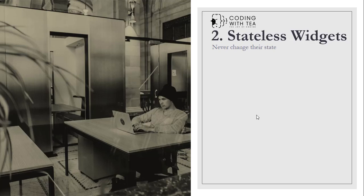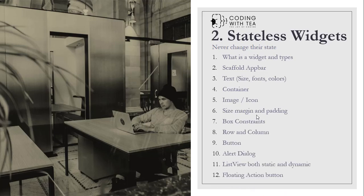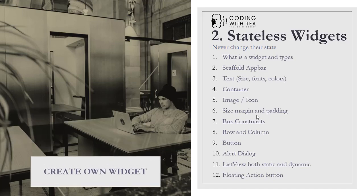Then there are stateless widgets — widgets that never change their state once the application is running. We will first cover what a widget is and its types, then scaffold, app bar, and material widgets. Text, container, and layout widgets are stateless because when we set our application layout we generally don't change it. Image, icon, margin, and padding are also stateless widgets. Finally, we will create our own custom widget using a combination of these widgets.